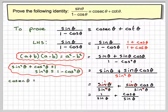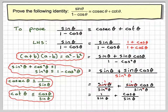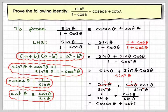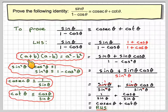Now, 1 over sine theta is equivalent to cosec theta, and cot theta is equivalent to cos theta over sine theta. So we replace to get cosec theta plus cot theta, which is what we had to prove. Therefore we have reached the right-hand side. What we've done here is prove a trig identity using the idea of the difference of two squares. I hope you understood, and thank you very much for watching.